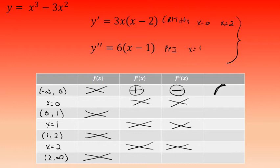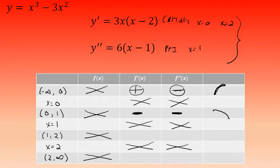The next interval is from 0 to 1. Choosing a test value of 1/2 and testing it in the first derivative, the value is negative. In the second derivative, it's also negative. That means between 0 and 1, this curve is decreasing and concave down. A curve that is decreasing and concave down will have this general shape.